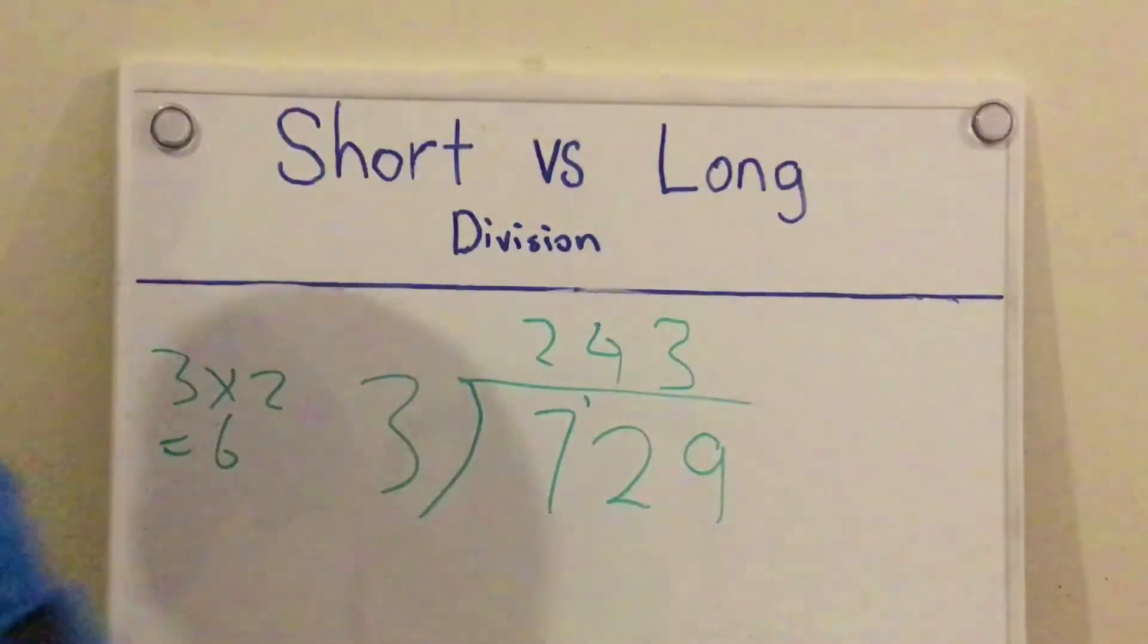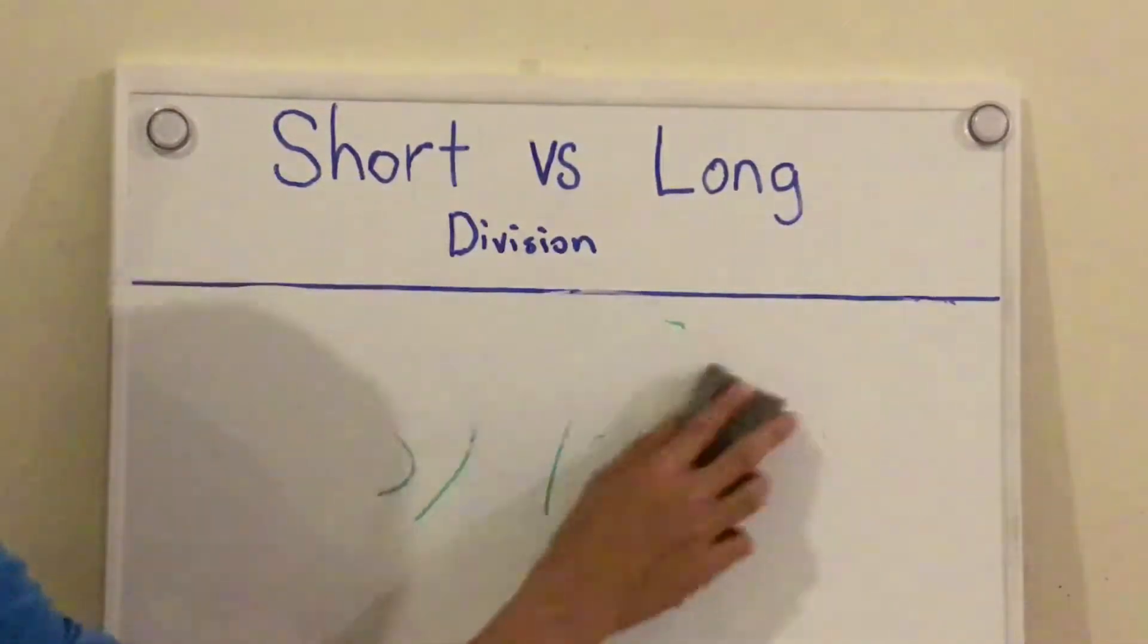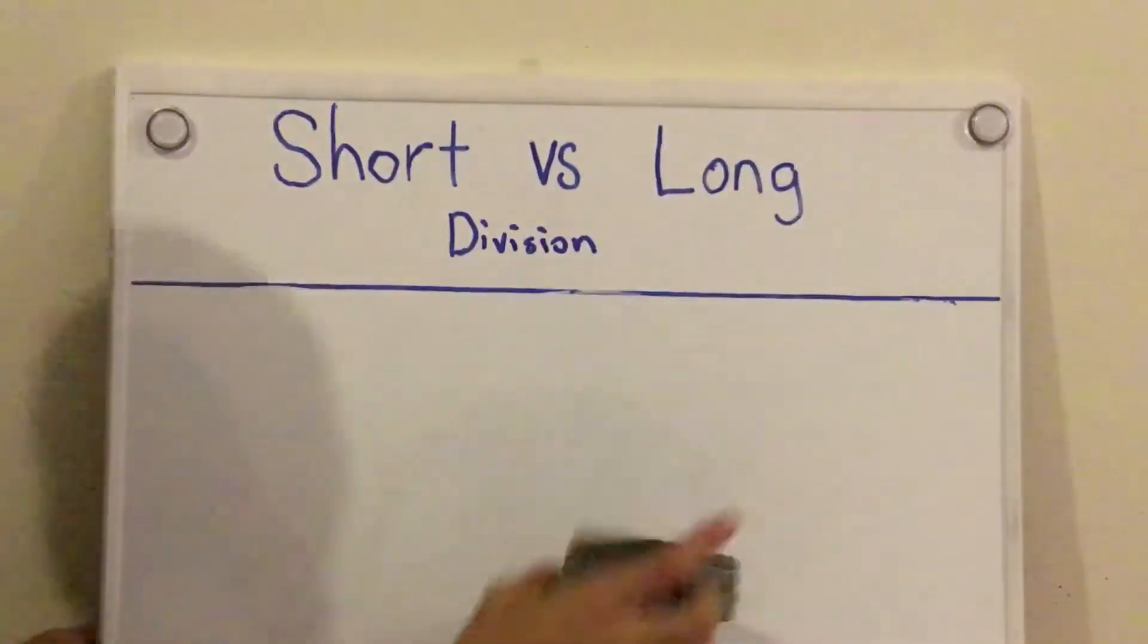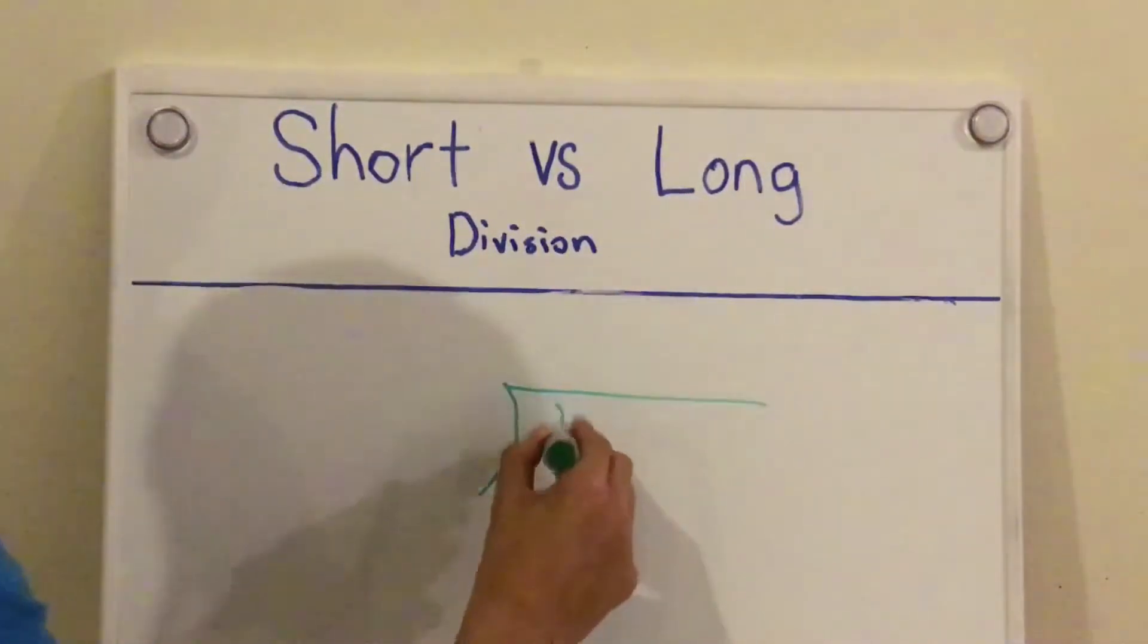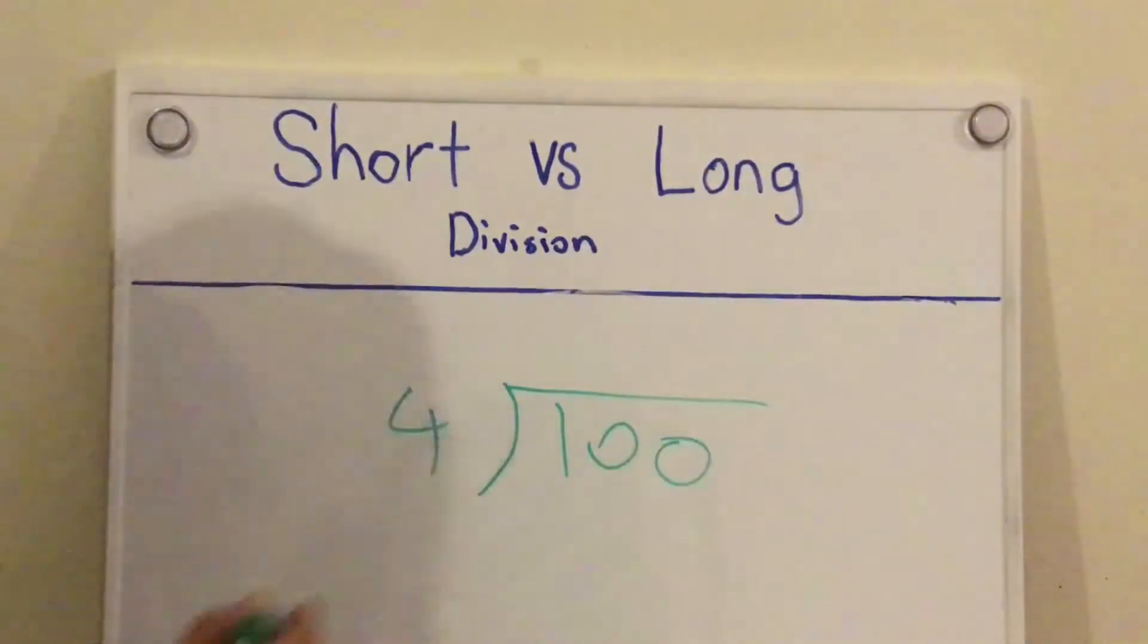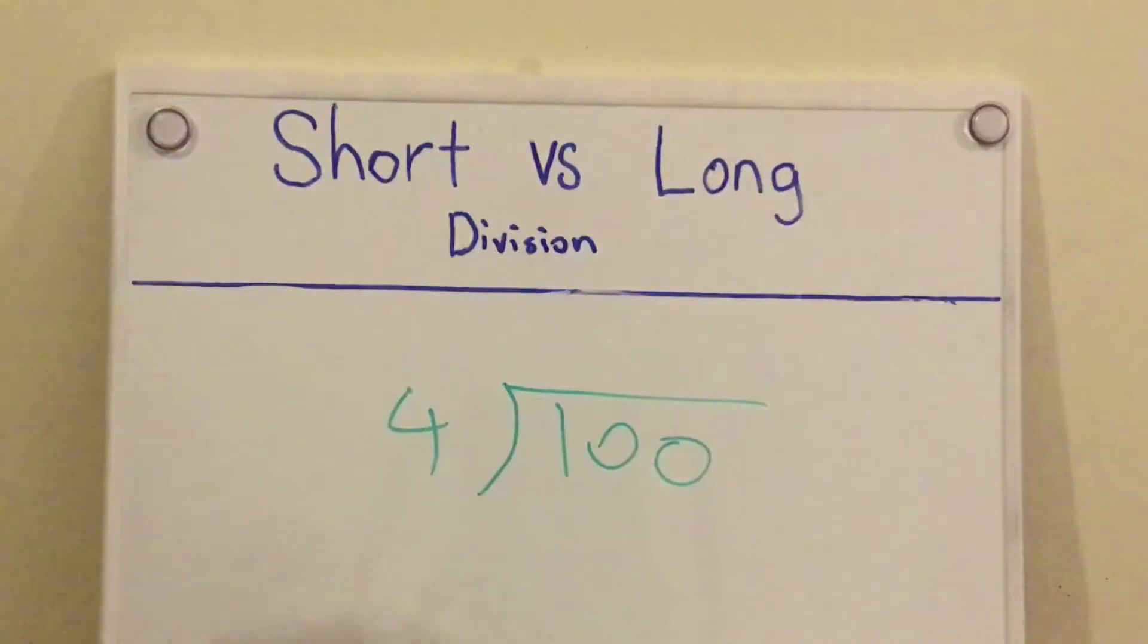Okay, so now let's move on to another example. So now let's do 100 divided by 4. Okay, so the first thing you need to do is try 1 divided by 4, which we can't do.